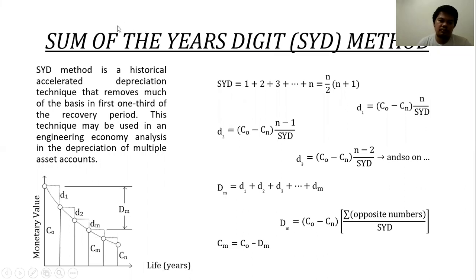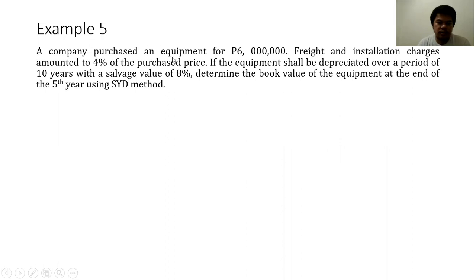We'll now apply the SYD method to a practical example. In Example 5, a company purchased equipment for 6 million, with installation charges amounting to 4% of the purchase price. The equipment shall be depreciated over 10 years with a salvage value of 8%. We are asked to determine the book value at the end of the fifth year using the SYD method.